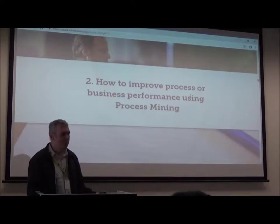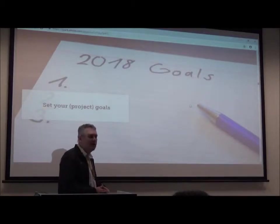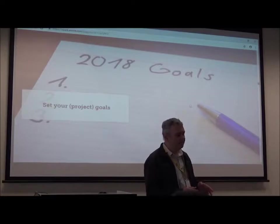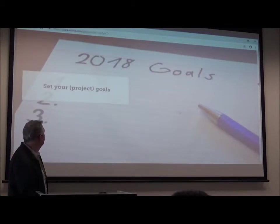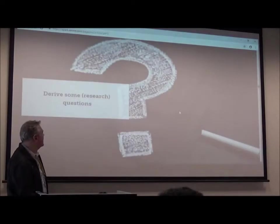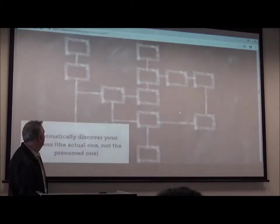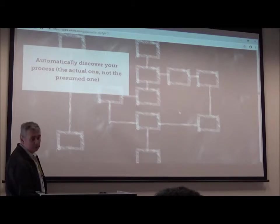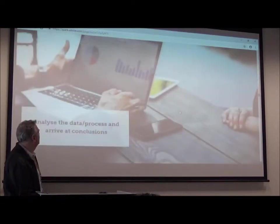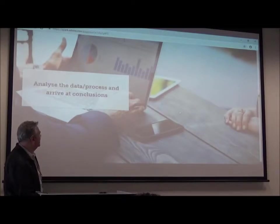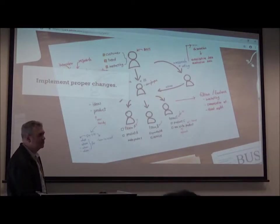But what is the new approach? What is the new way to do that using process mining? If you think you have poor performance and want to improve it, my suggestion is to follow these steps: set your goals, derive some research questions, get relevant data, automatically discover your actual process - not the presumed one - analyze the data and the process, arrive at conclusions, and then implement proper changes in your business or processes.